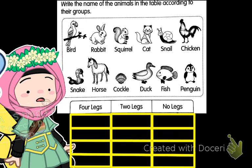Look at this picture. Name the animals in the table according to their groups. There are three groups: four legs, two legs, and no legs. First, we look at bird. What group is bird? How many legs?